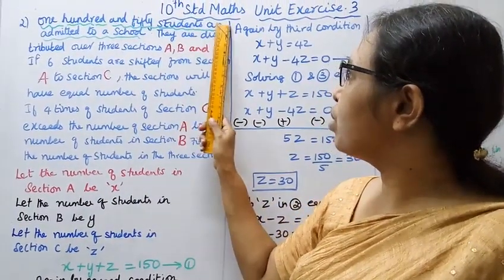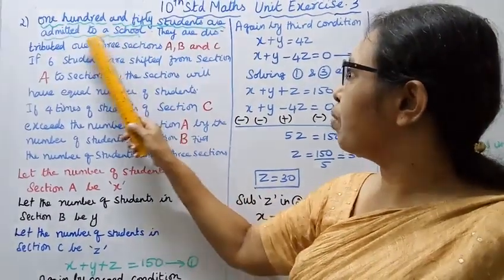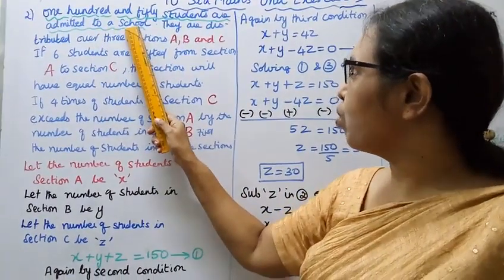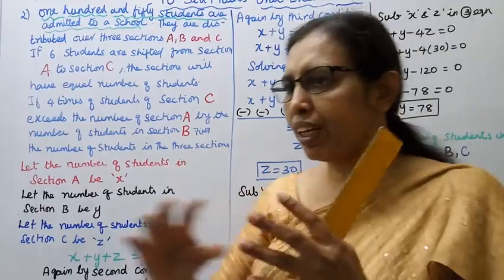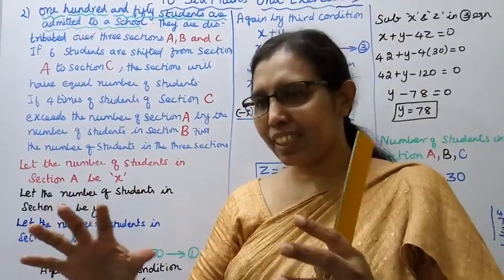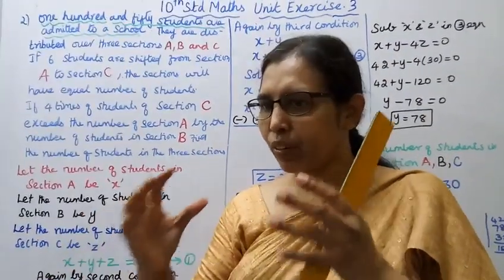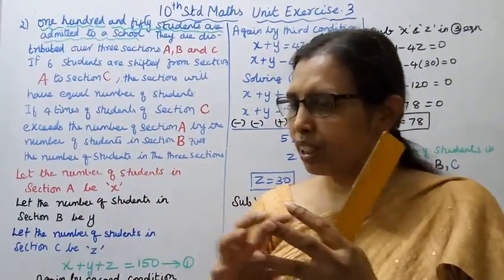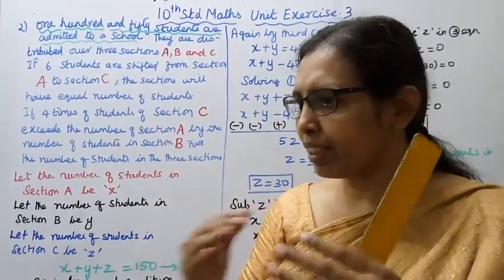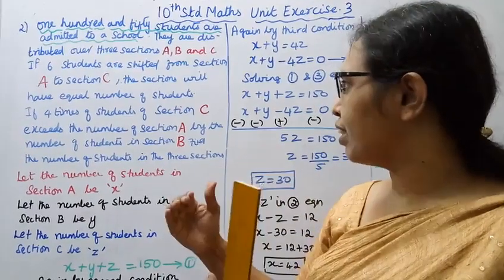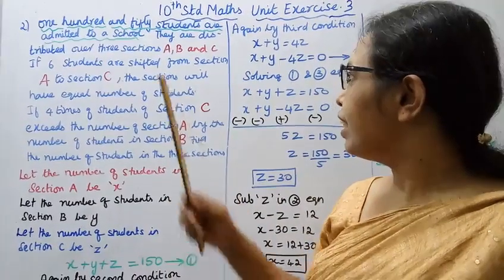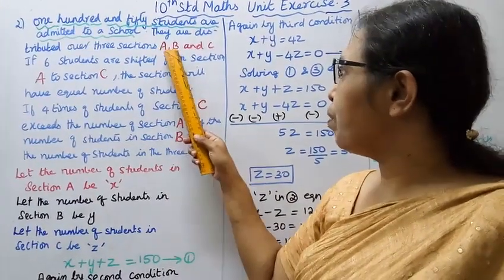150 students are admitted to a school, distributed over 3 sections. 150 students are distributed over section A, section B, section C. Let the number of students in sections A, B, C be x, y, z respectively.